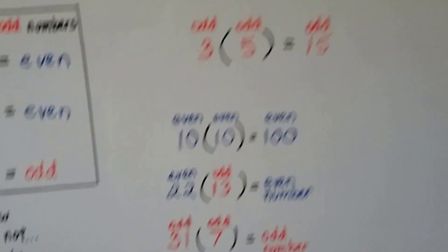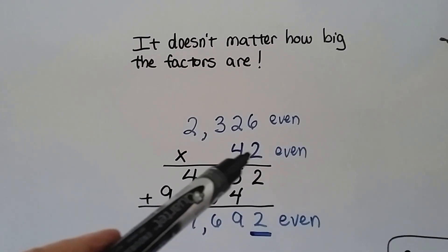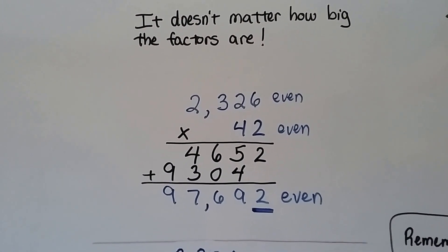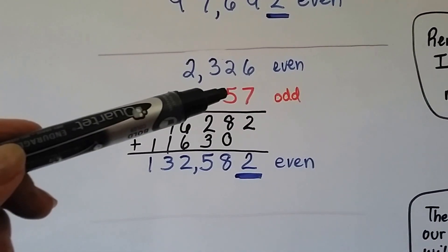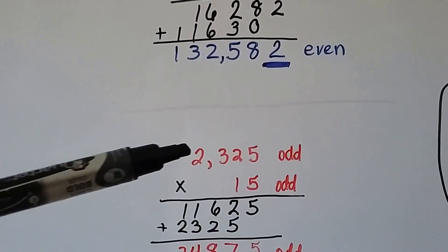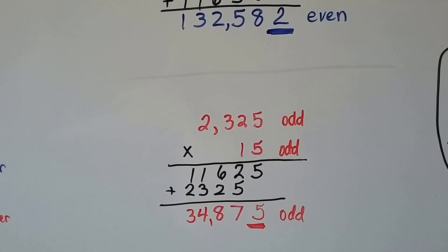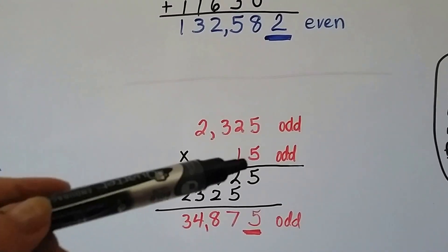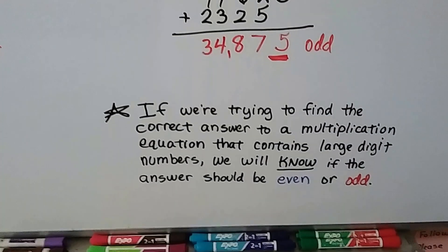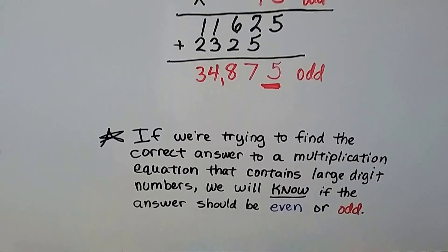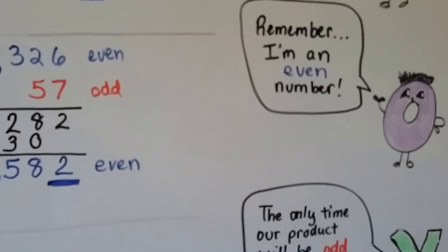Without even knowing what the answer is, we'll know if it should be even or odd, and it doesn't matter how big the factors are. We could do 2,326 — which is even — times 42 — which is even — and we know whatever it is it's going to be even. If we multiply a big number like 2,326 times an odd number, we're still going to get an even number. But if we multiply two odd numbers, whatever that answer is going to be is going to be odd. If you want to know how to do two-digit times four-digit multiplication, there are links in the description. Just remember that zero is an even number.